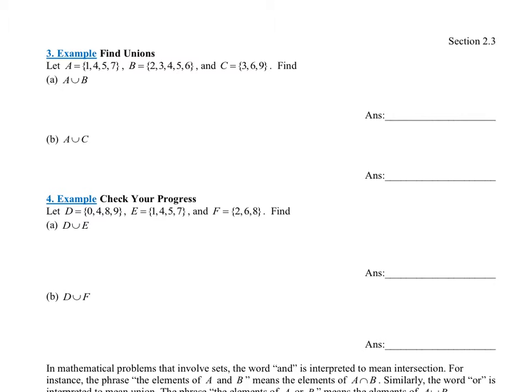So let's look at example three. This is a throwback to problem one. We have the exact same sets. A is the set 1, 4, 5, 7. B is the set 2, 3, 4, 5, 6. And C is the set 3, 6, 9.